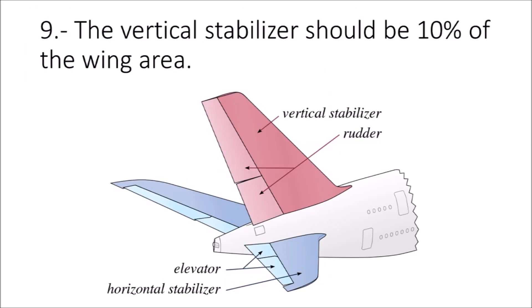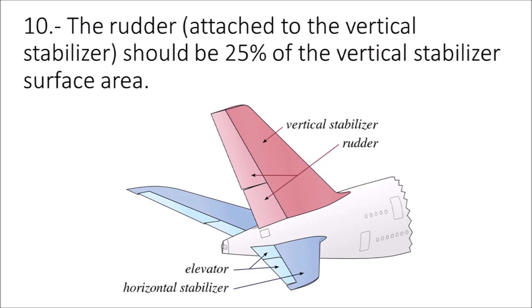The vertical stabilizer should be 10% of the wing area. The rudder that is attached to the vertical stabilizer should be 25% of the vertical stabilizer surface area.